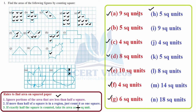For part H, counting complete squares: one, two, three, four, and five — therefore the area is 5 square units. For part I, counting complete squares: three, four, five, six, seven, eight, and nine — this gives 9 square units of area.